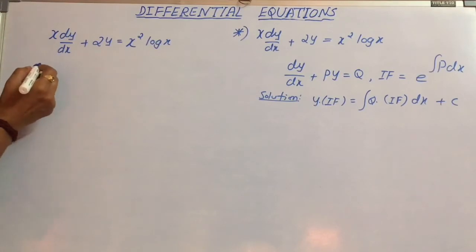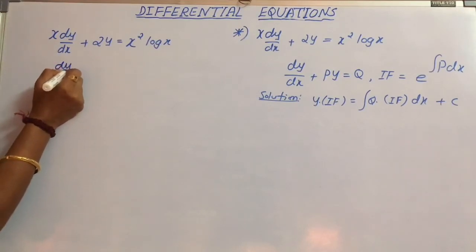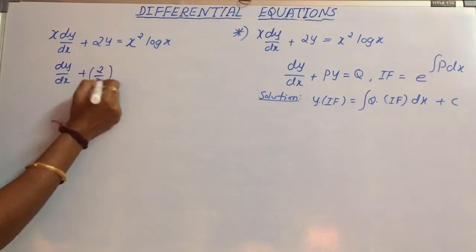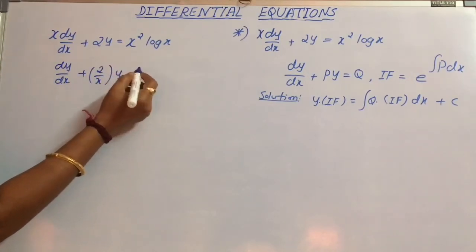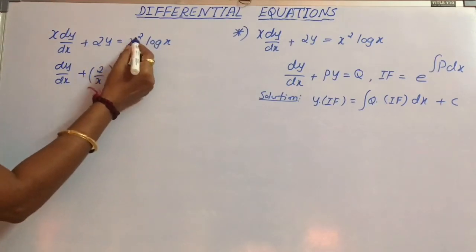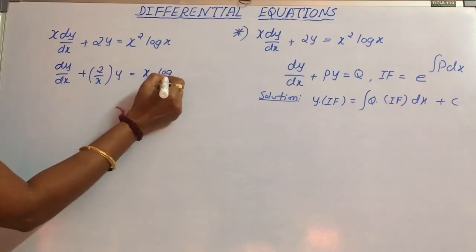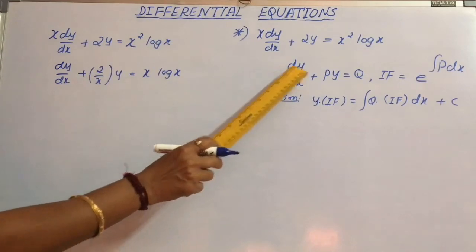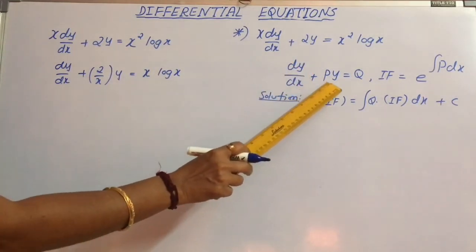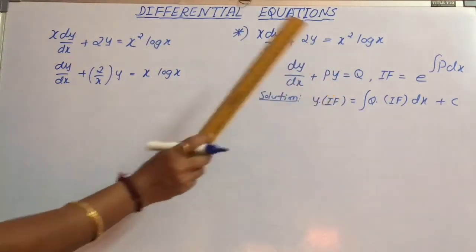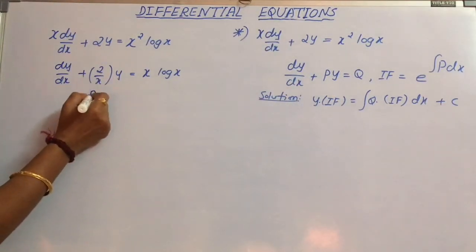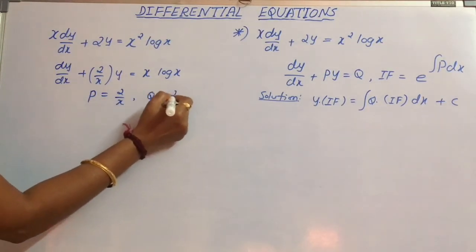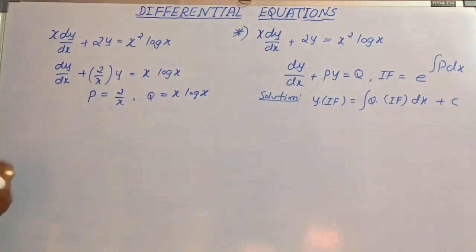If we divide this equation by x, we will get dy/dx + (2/x)y = x log x, since dividing the right side by x cancels one x, leaving x log x. Comparing with the standard form dy/dx + Py = Q, the coefficient of y is P. Therefore, P = 2/x and Q = x log x.